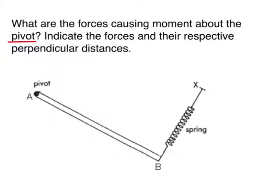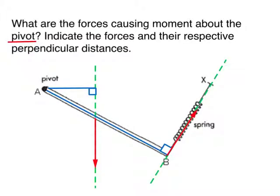What are the forces causing moment about the pivot? There must be one at the centre of gravity of this rod, acting downward, and the other one provided by the spring — you can see the tension on the rod acting in that direction. More precisely, as shown in this diagram: the perpendicular distance from the pivot to the weight is this one, whereas the perpendicular distance from the pivot to the tension is this.